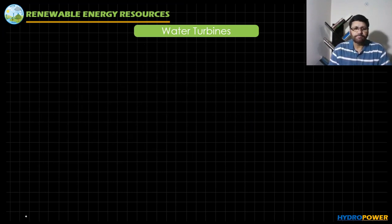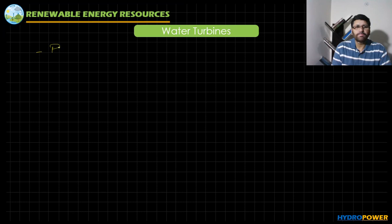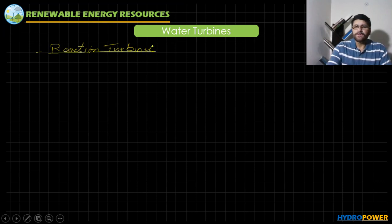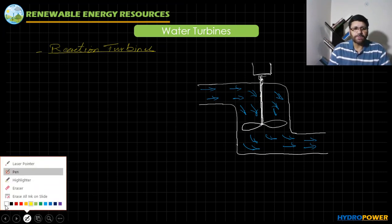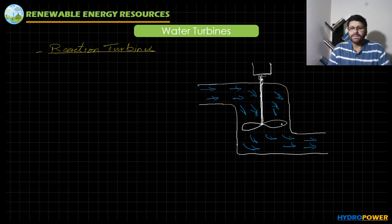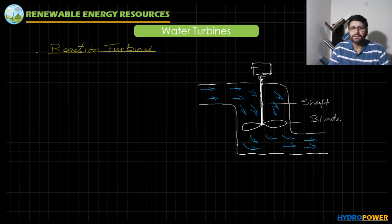The next category of turbine is the reaction turbine. This is the overall structure of the reaction turbine. Here you can see the turbine is embedded in the water. These are the blades of the turbine, and this is the shaft of the turbine which connects the turbine with the generator.